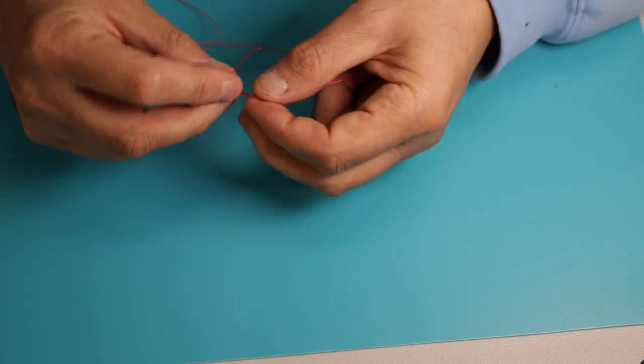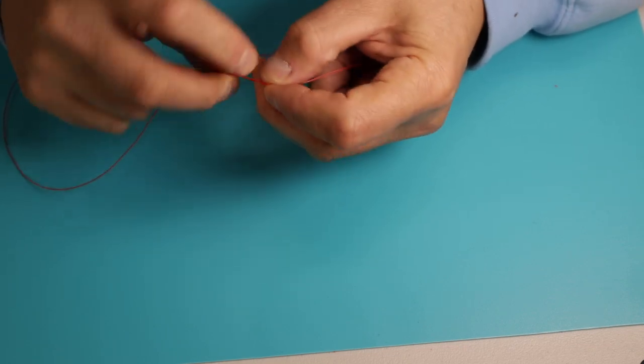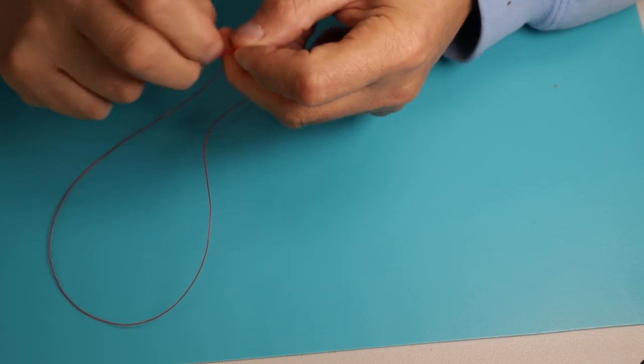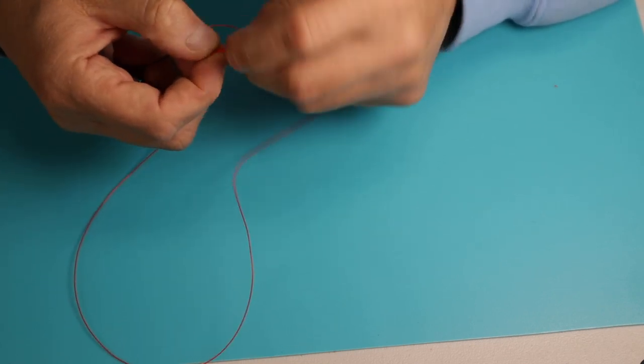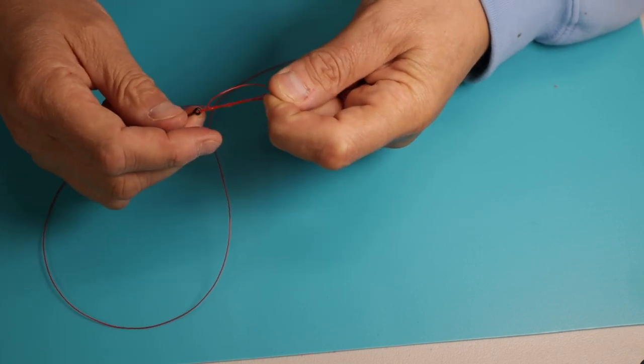You then need to go around this three times: one, two, and three. And then start to form your knot.